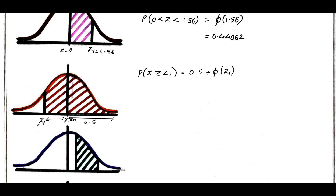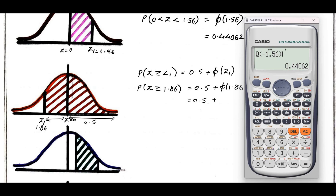For the value z1 equal to 1.86, I need to find out the probability of z greater than or equal to 1.86, which is nothing but 0.5 plus phi of 1.86. I need to find phi of 1.86, and I will replace the value with 1.86 in the calculator. I got the answer as 0.46856.